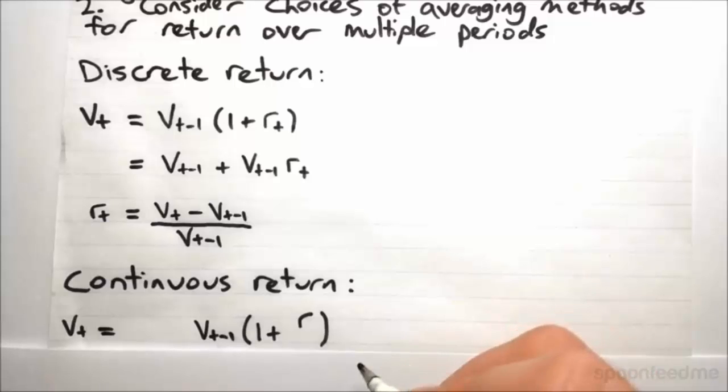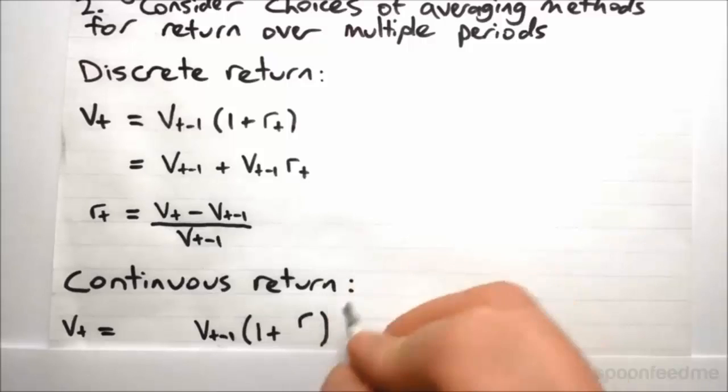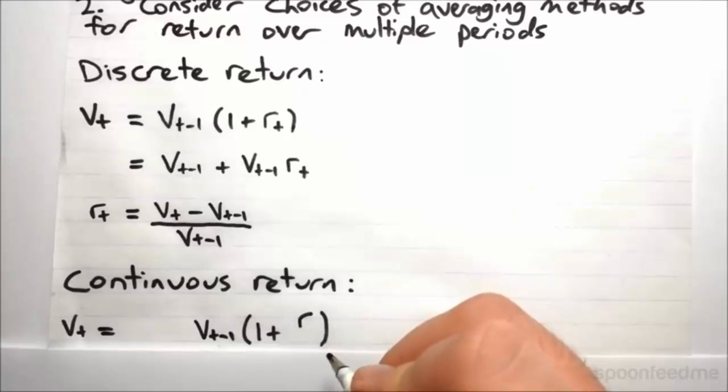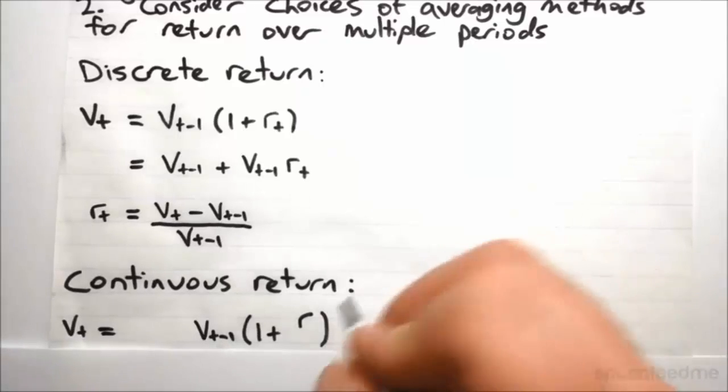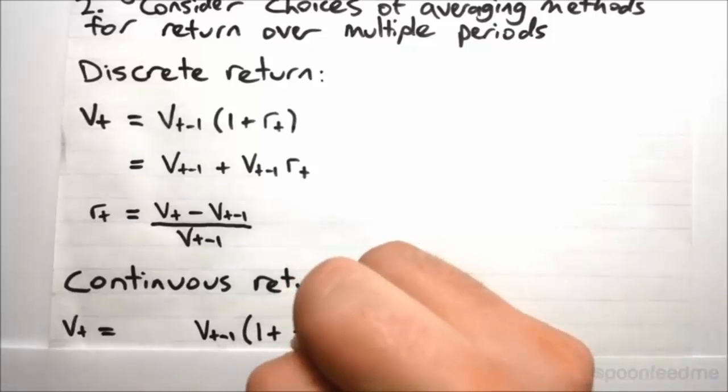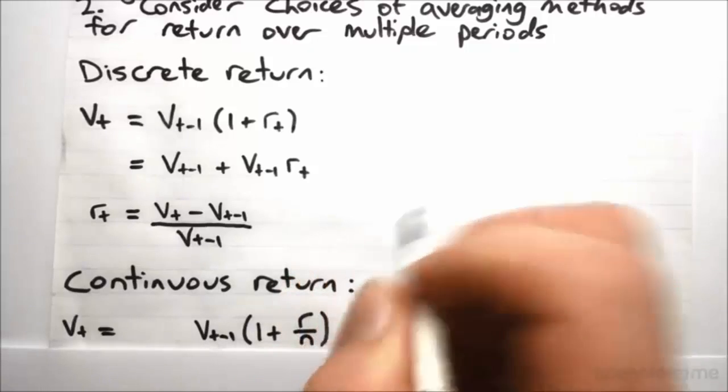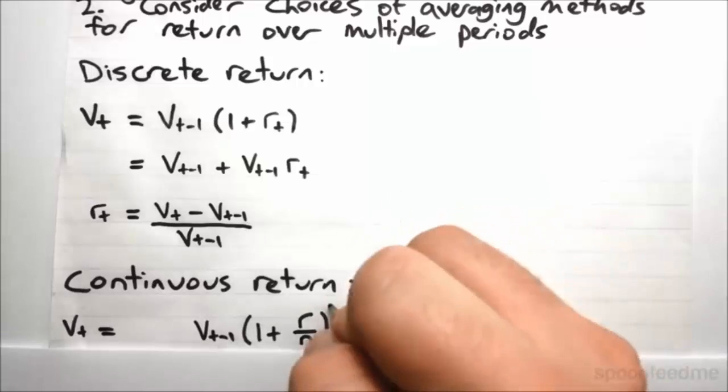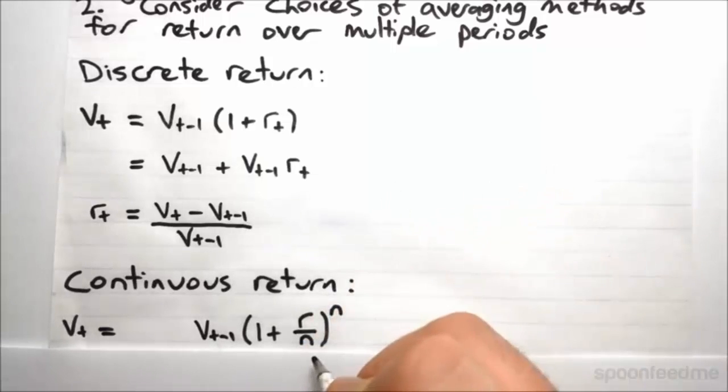If we were to say that interest kicks in three times over the single period, then we would divide the rate by 3 and take this to the power of 3, because you'd multiply by 1 plus r over 3 the first time, then multiply it again, and then multiply it again. So we generalize this out. We say 1 plus r over n to the power of n. This is saying that n times we receive interest, which is one-nth of the rate that is applicable to the entire time period.